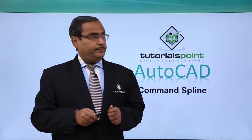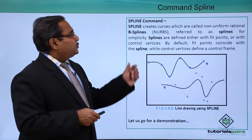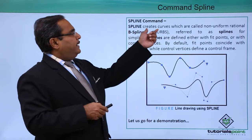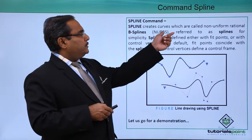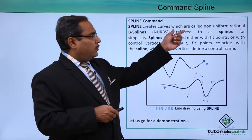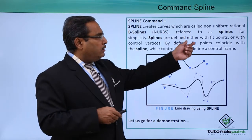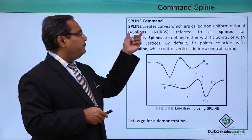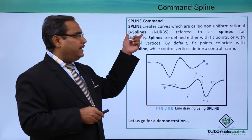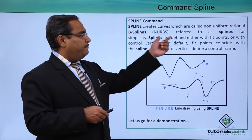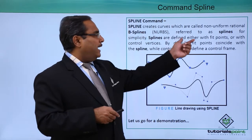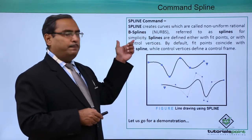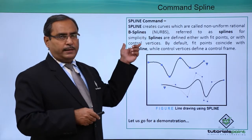Common spline creates curves which are called non-uniform rational B-splines, referred to as splines for simplicity.